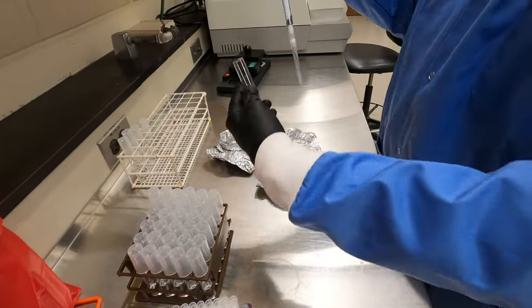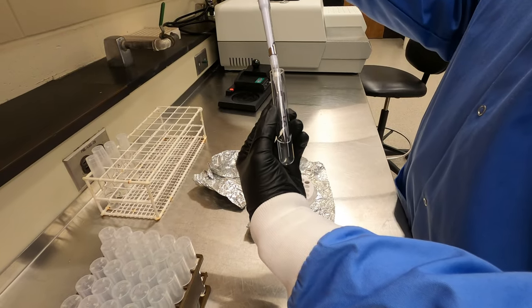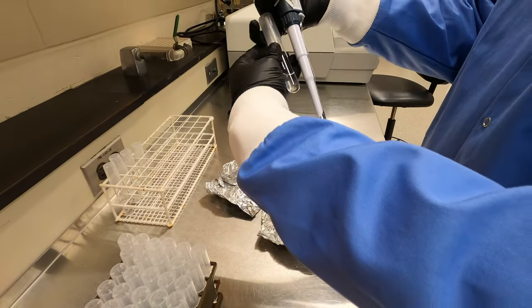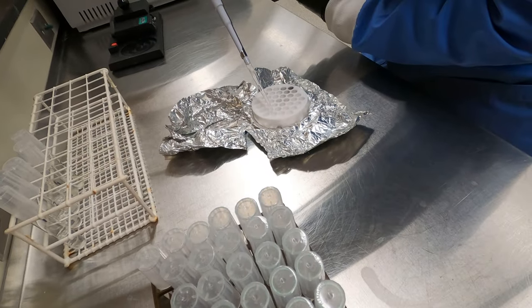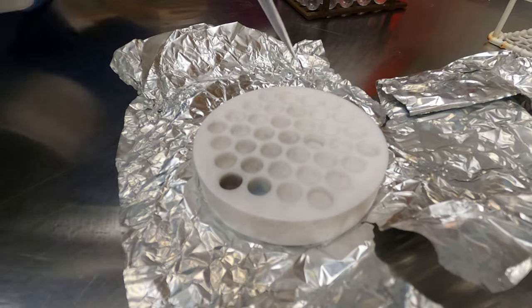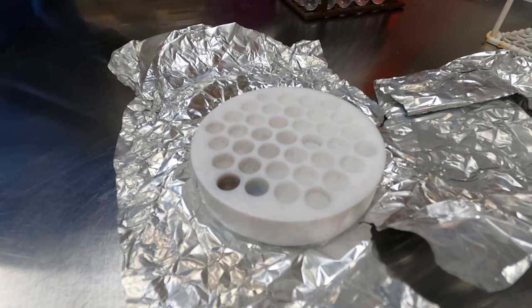To perform the test, we spot a particular volume of our McFarlane 0.5 suspension onto the agar plates. In our lab, we do this using a replicator plate system, and the first step of this process is to dispense our bacterial suspensions into each of the wells of this well plate.